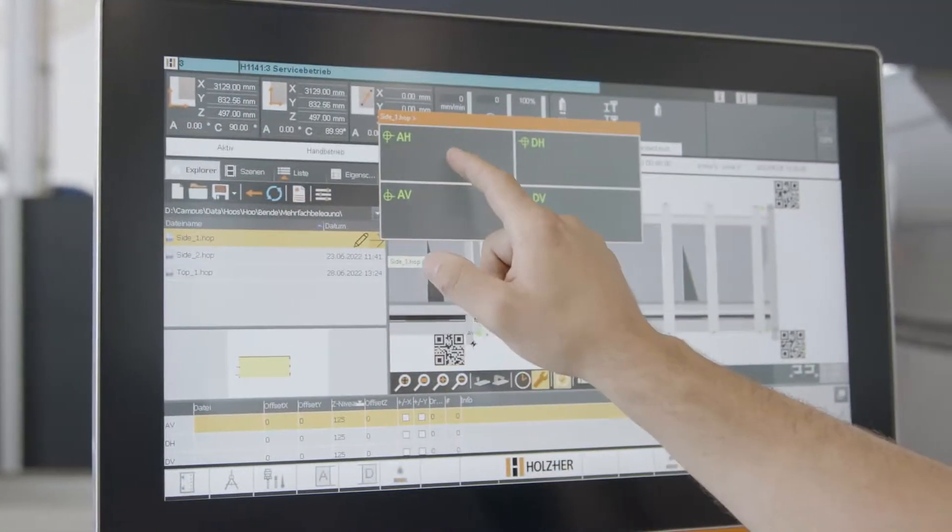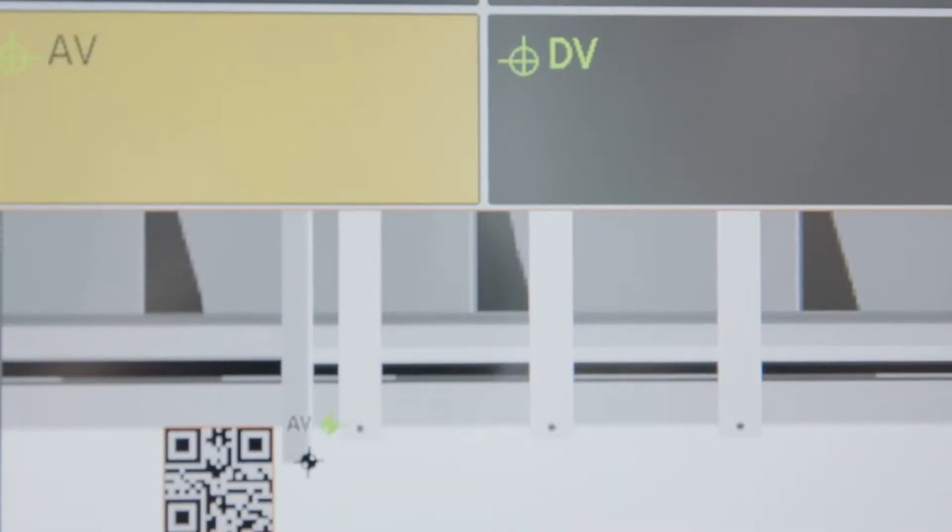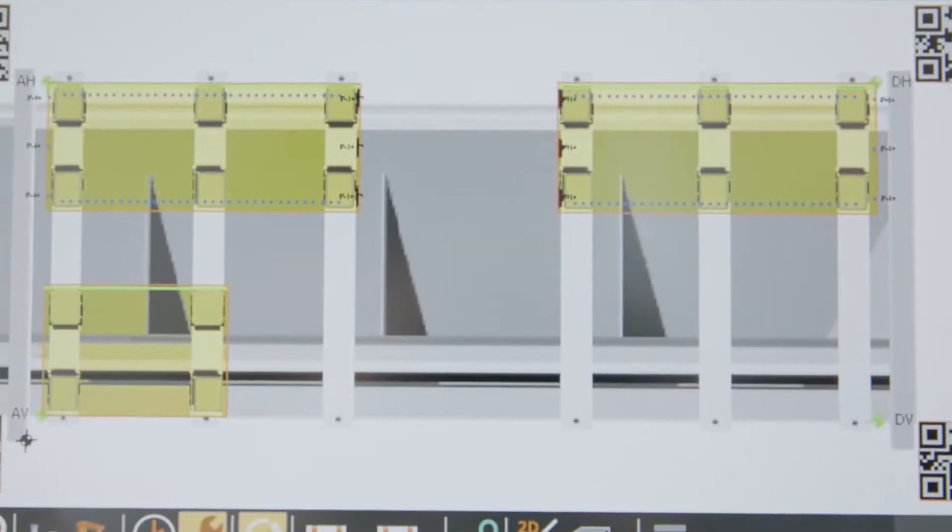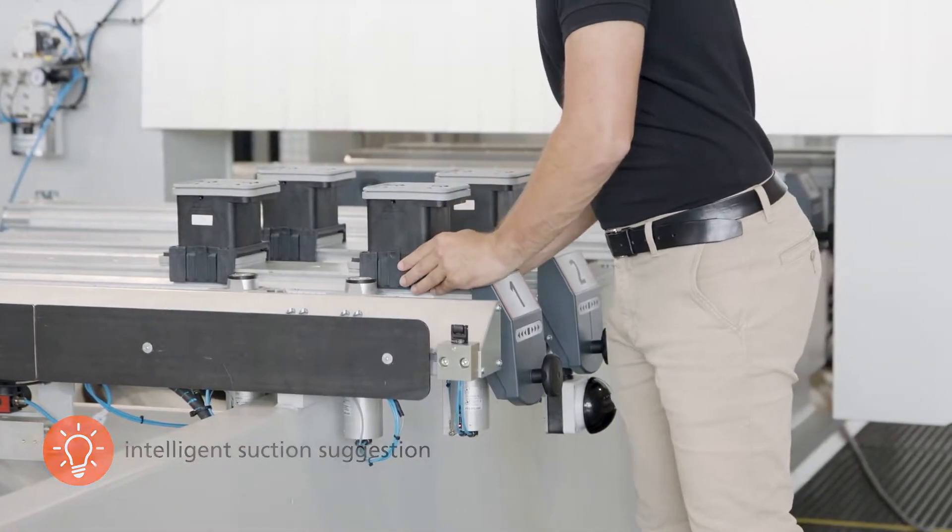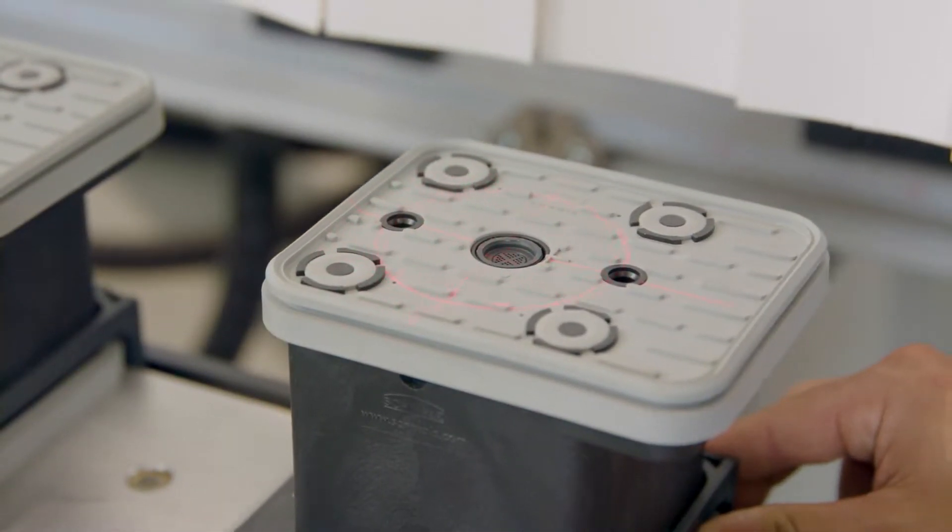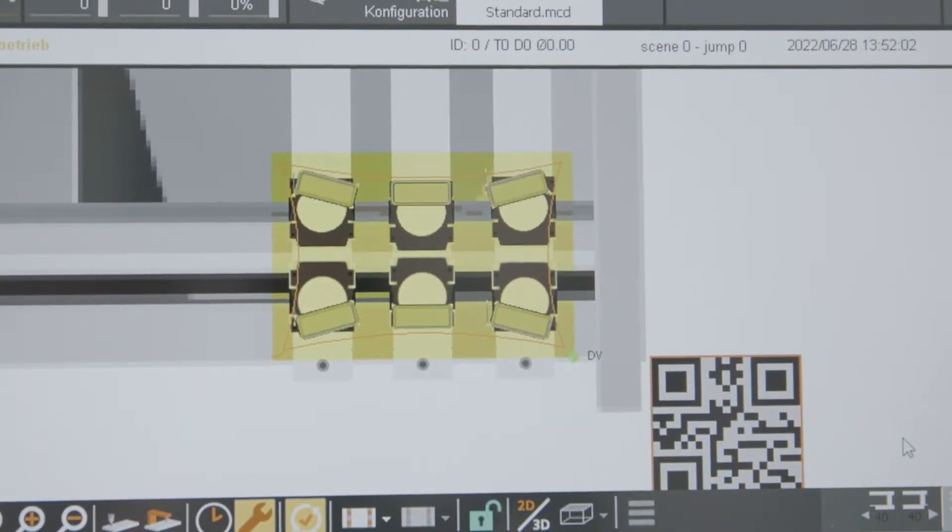The campus package also allows the machine table to be easily occupied with several workpieces via the touch screen or by drag and drop. The software calculates the optimum position of the vacuum cups, which can then be placed precisely in minutes using the laser pointer or the optional 2D sealing laser.